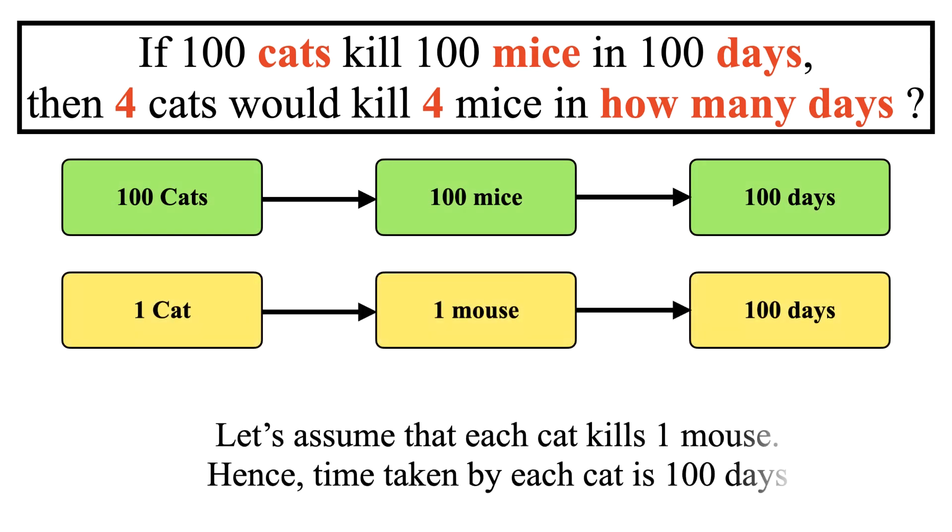Let us assume that each cat kills one mouse. Hence, time taken by each cat is 100 days, which will be equal for any number of cats.